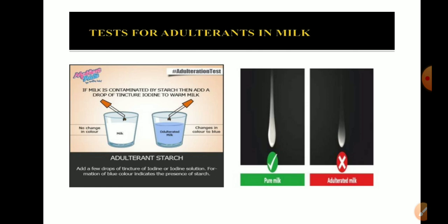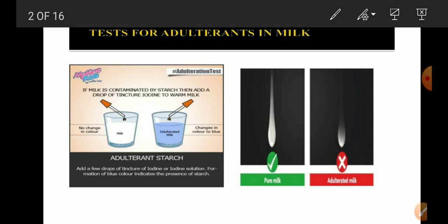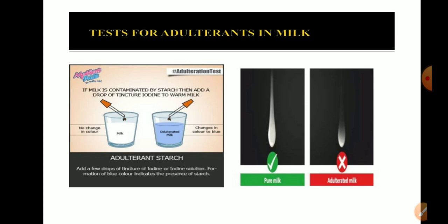To test for starch contamination in milk, add a drop of tincture of iodine into warm milk. If there is no change in color, the milk is pure. If the color changes to blue, the milk is adulterated with starch.